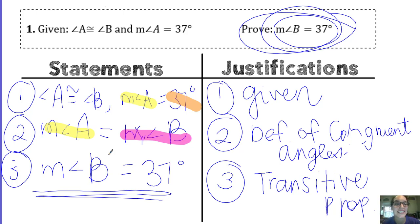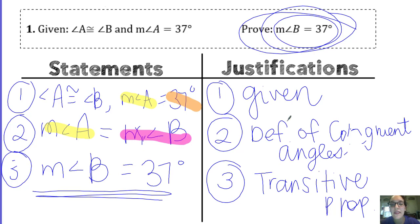The big idea is: whenever you're switching between angles being congruent and angles being equal — or vice versa, their measures being equal — that's the definition of congruent angles.